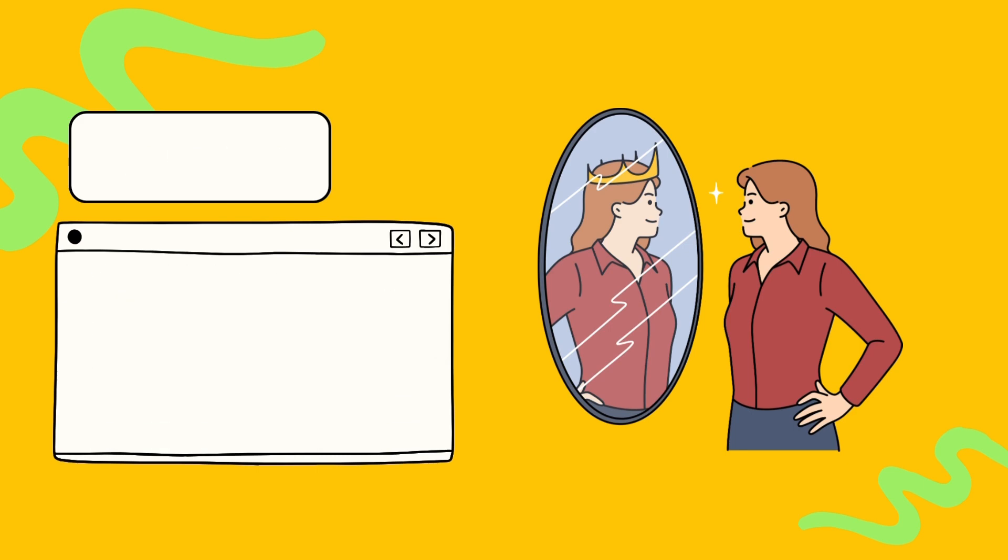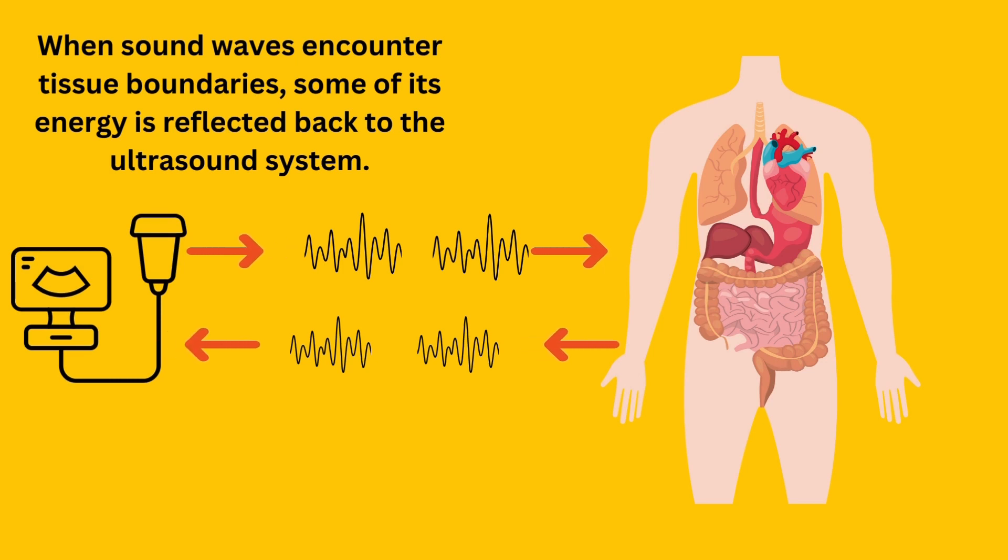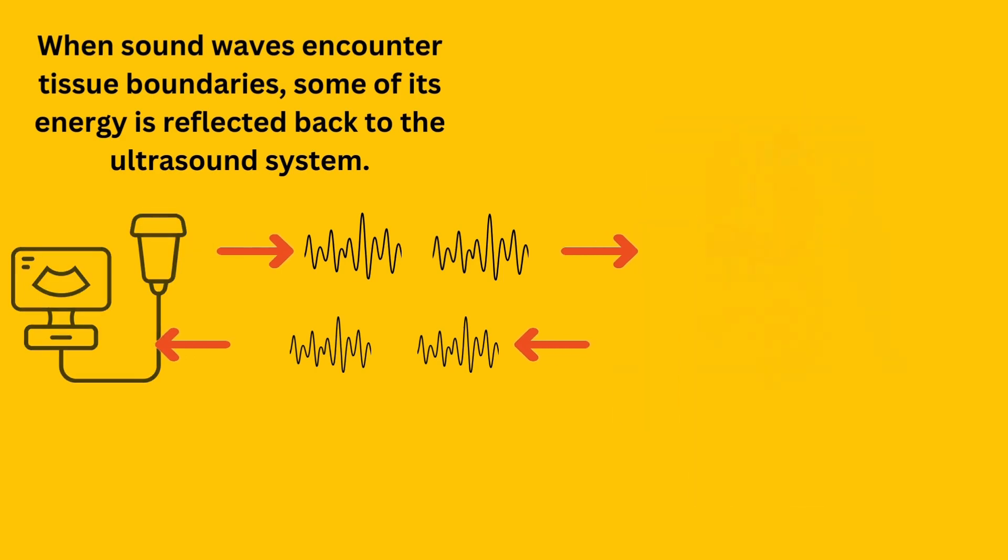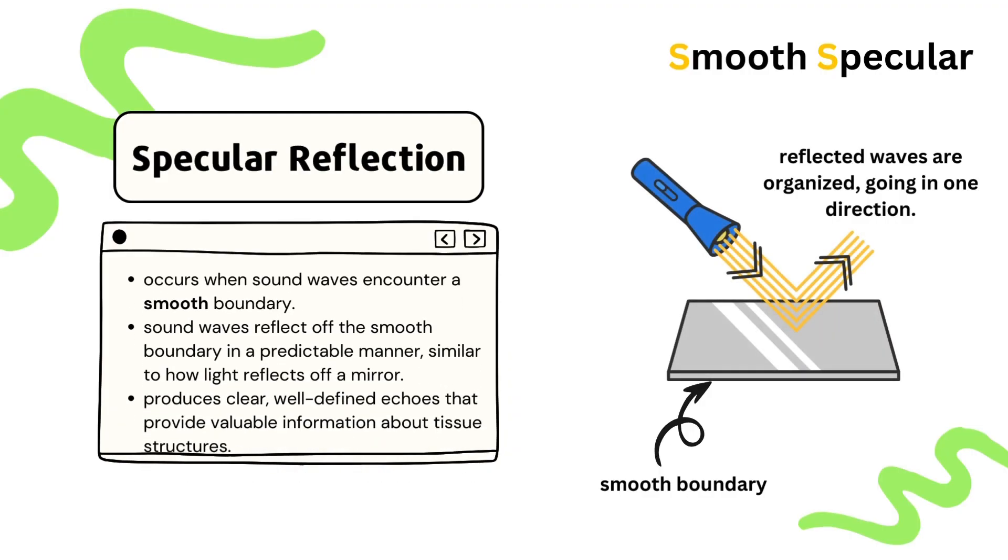Similar to how light reflects off a mirror, sound waves bounce back when they encounter tissue boundaries in the body. This leads to echoes in ultrasound imaging, helping to create a beautiful image. As sound waves reflect off tissue boundaries, some of their energy is absorbed and they lose their intensity. This loss of energy contributes to attenuation, reducing the overall strength of the ultrasound signal as it travels deeper into the body. Reflection can be categorized into two main types: specular and diffuse.